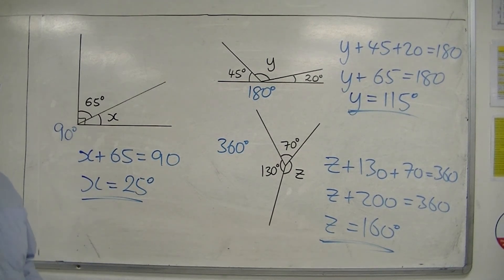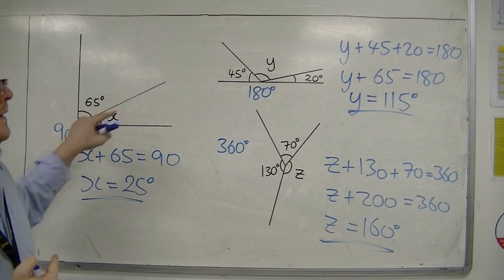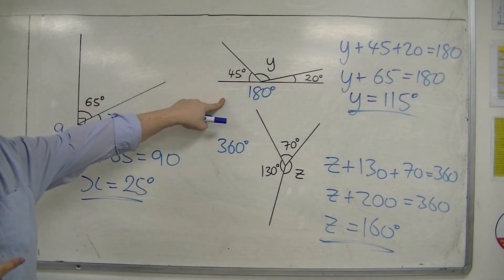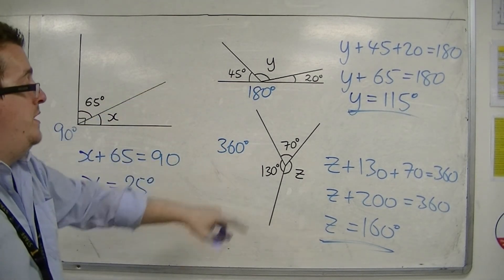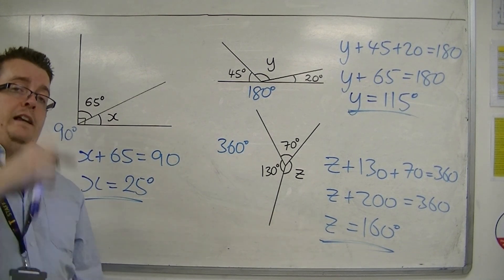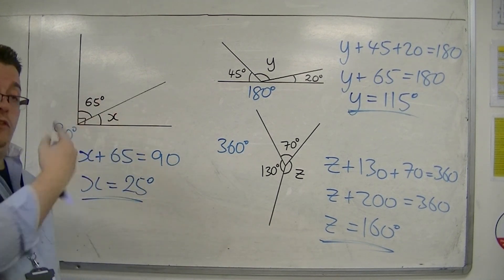So you need to know these three cases. Angles in a right angle must add up to 90. Angles on a straight line must add up to 180. And angles around a point must add up to 360. And using these three facts, you can solve these types of problems.